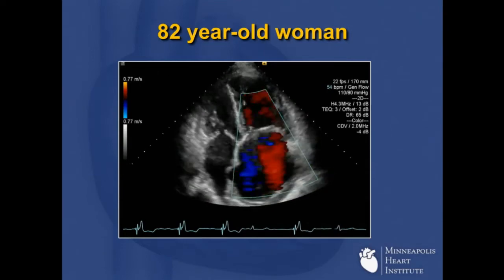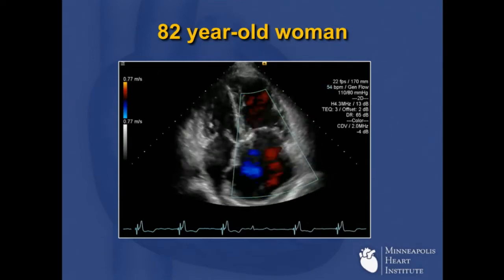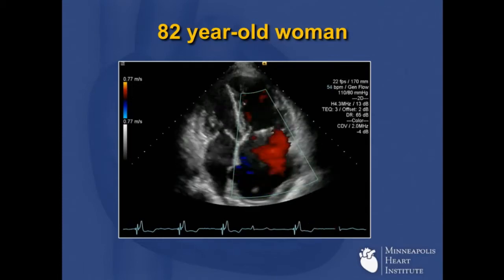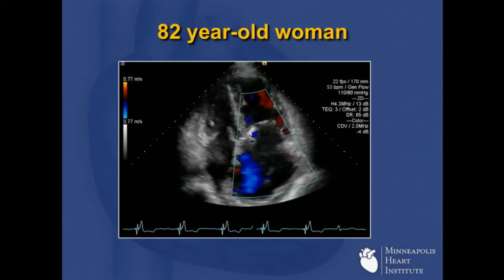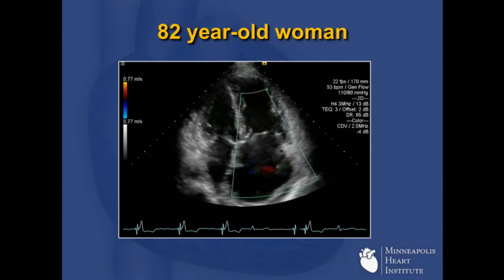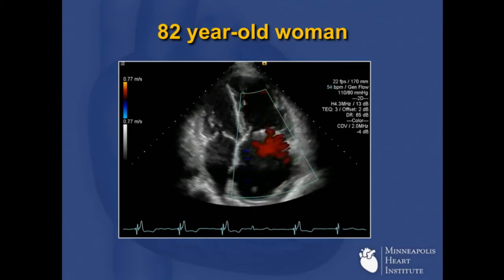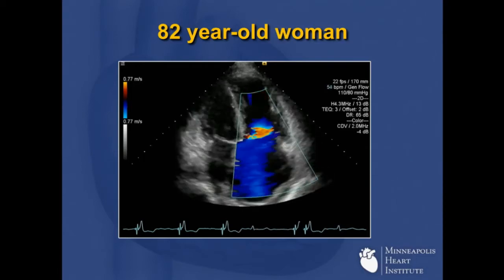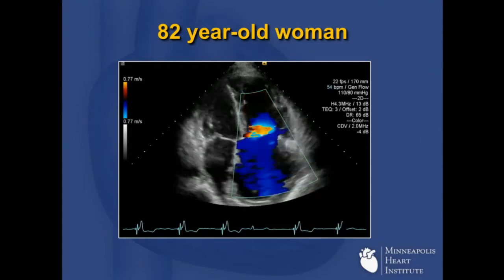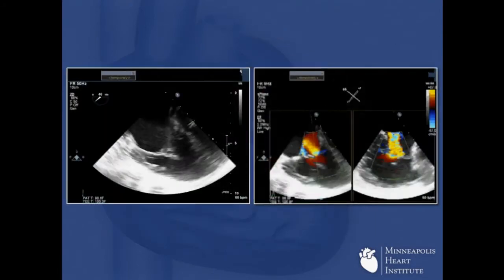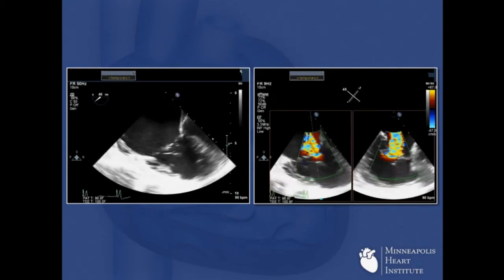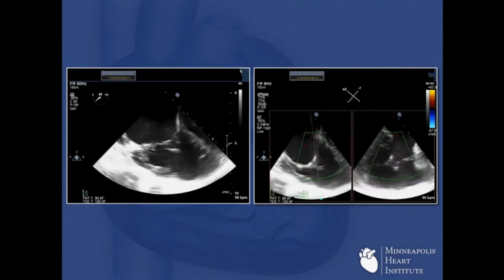This is an 82-year-old woman. If you look here, when the RV is bigger than the LV, it's not good — you can name that sign after me or after Dr. Bobblieros if you want, but it's just not a good sign when it looks like this. Clearly there is a lot of severe TR.